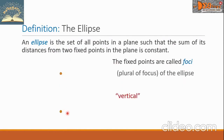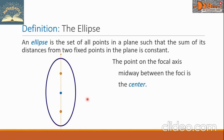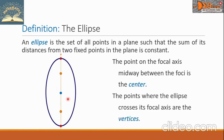Here we have two points arranged vertically, and we have the ellipse here. The line through these two foci is sometimes called the focal axis. The point on the focal axis midway between the foci is the center. In our figure, this is the center. The points where the ellipse crosses its focal axis are the vertices. We have two vertices — this is the first, and this is the second.